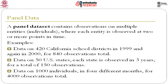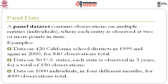We have data on 1,000 individuals in 4 different months for 4,000 observations in total. We have entities — states — and time periods — years. Here, i is the entity (state) and n is the number of entities, so i runs from 1 to n. T is the time period and capital T is the number of time periods, so small t runs from 1 to T.